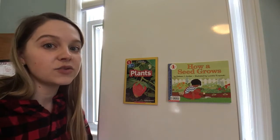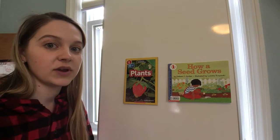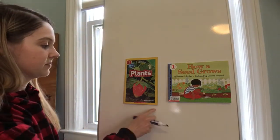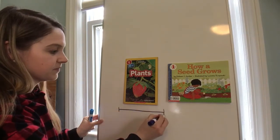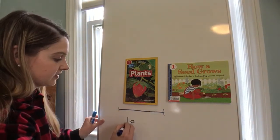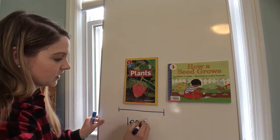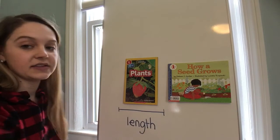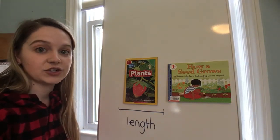When you measure something there are two different ways that we are going to be measuring things. If you measure something from side to side like this, we call this length. We are going to be measuring this week the length of different objects.